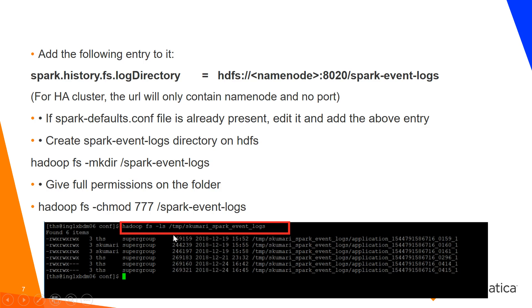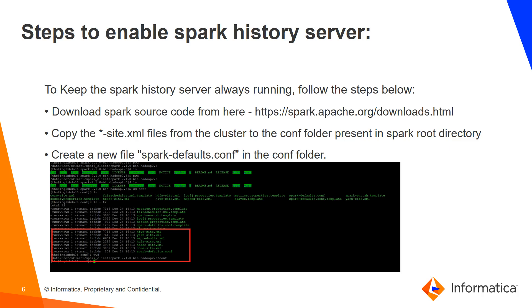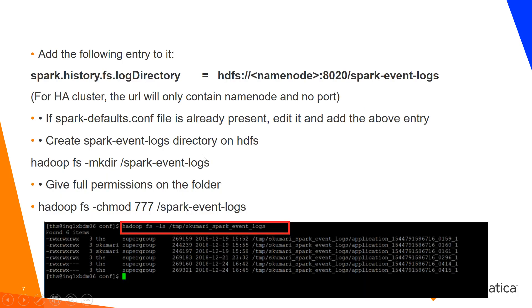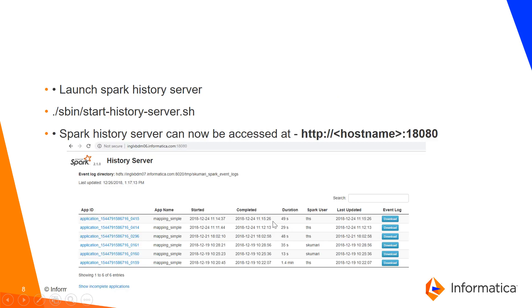The file where we configure this property is spark-defaults.conf. It is already present in many cases; if it is not, please create one and add this property. The directory configured as the log directory must have permissions granted to all users who will be submitting Spark jobs, so that the logs will be written there. I have created a new directory for this demo, /temp/skumari_spark_event_logs, and given permissions to all users on this directory.